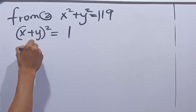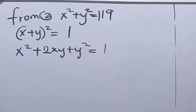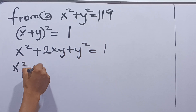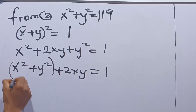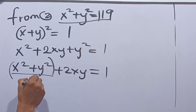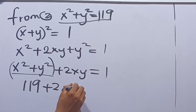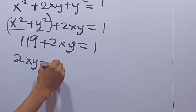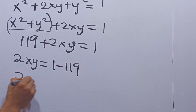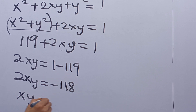x plus y squared expands as x squared plus 2xy plus y squared, and this equals 1. So we have x squared plus y squared plus 2xy equals 1. Substituting x squared plus y squared equals 119, we get 119 plus 2xy equals 1. Therefore 2xy equals 1 minus 119, which is negative 118, so xy equals negative 59.